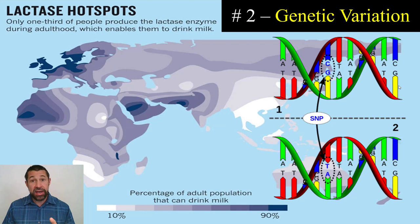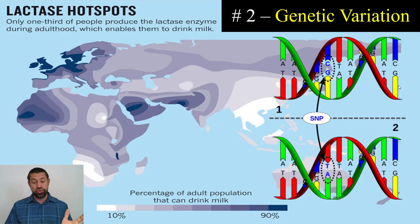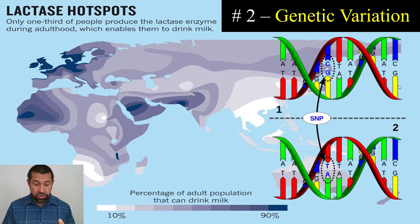The second source of phenotypic variation is the underlying genetic variation. Different alleles produce different traits within the same species. For example, whether or not you can digest lactose — the sugar that's in milk — has nothing to do with the environment, whether you were breastfed or bottle-fed or how much milk you received as a child.